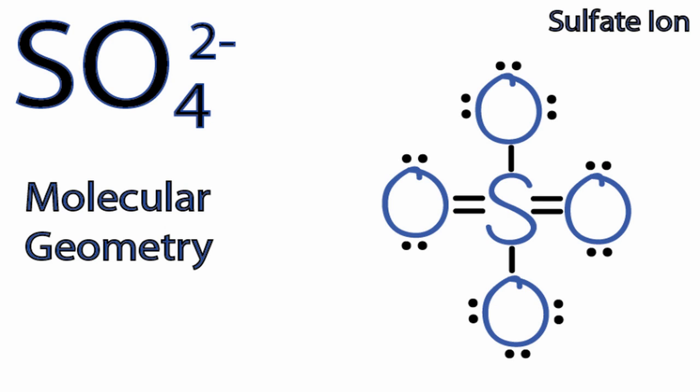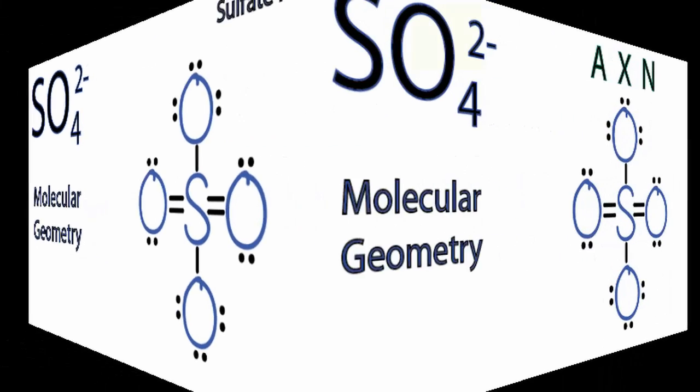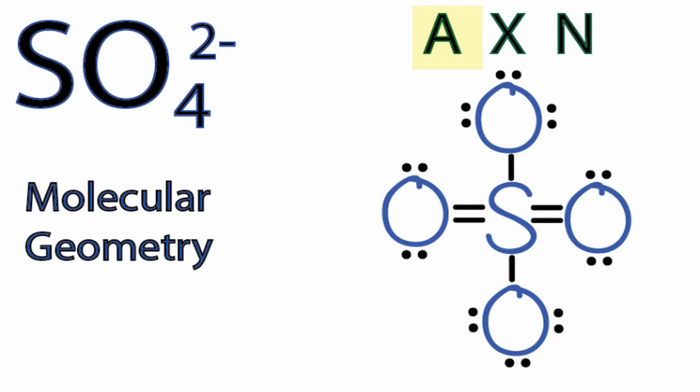To help us let's use the AXN notation to figure the molecular geometry for SO4 2-. A, that's the central sulfur. X, that's the number of atoms bonded to the central sulfur.